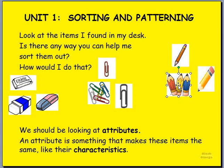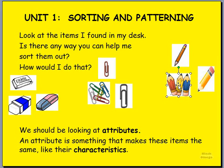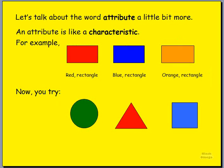We looked at attributes. You may not have heard that word before, but an attribute is something that makes the items the same — what makes one group similar, like their characteristics. What makes these items the same? What words can we use to describe them? Let's have a look at something else. An attribute, like we said, is a characteristic — words that we use to describe the object.